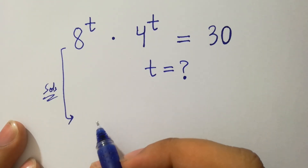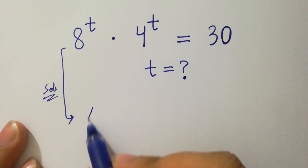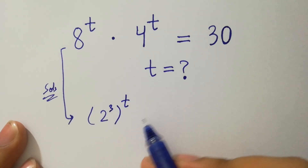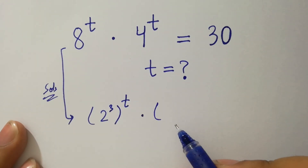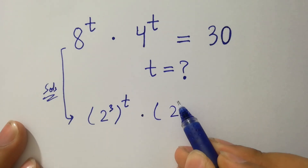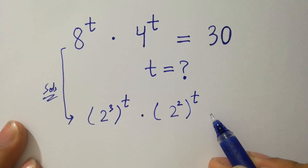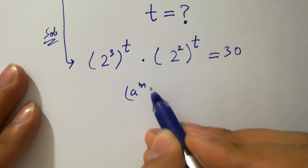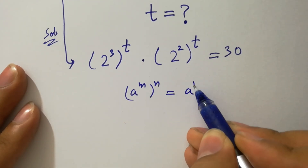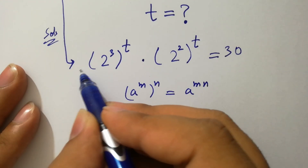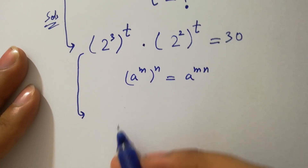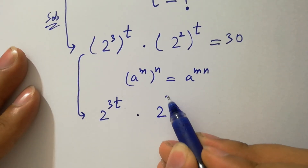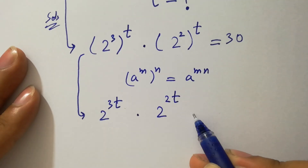Here, 8 to the power t is the same as 2 cubed to the whole power t, times 4 to the power t, which is the same as 2 squared to the whole power t, equal to 30. Since a to the power m to the whole power n equals a to the power mn, we can write it as 2 to the power 3t times 2 to the power 2t equal to 30.